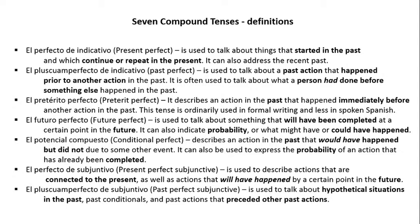El futuro perfecto, the future perfect, is used to talk about something that will have been completed at a certain point in the future; it can also indicate probability or what might have or could have happened. El potencial compuesto, the conditional perfect, describes an action in the past that would have happened but did not due to some other event; it can also be used to express the probability of an action that has already been completed. El perfecto del subjuntivo, the present perfect subjunctive, is used to describe actions that are connected to the present as well as actions that will have happened by a certain point in the future. El pluscuamperfecto del subjuntivo, the past perfect subjunctive, is used to talk about hypothetical situations in the past, past conditionals, and past actions that precede other past actions.